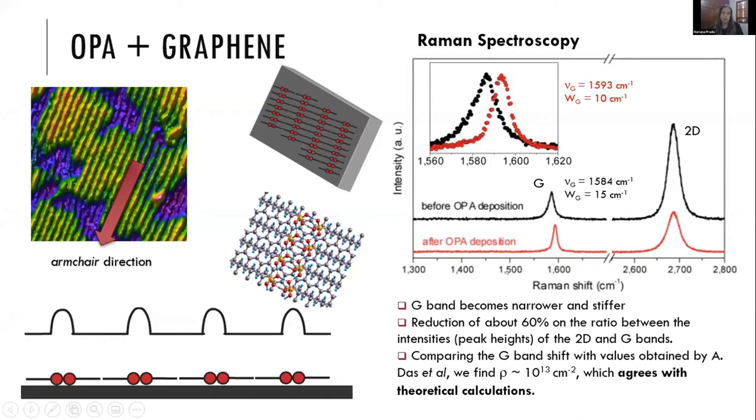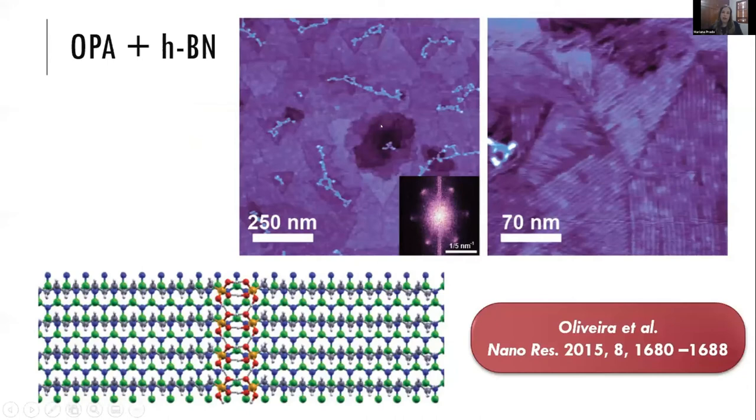For hexagonal boron nitride, here I have an AFM image of OPA deposited on top of multi-layer BN. We see the corrugation, the domains, and the structure forms with 60-degree symmetry and 5-nanometer period. Our ab-initio calculations show similar results: the head groups that form those corrugation lines are in the armchair direction. We used this system to help clarify the formation of wrinkles in BN.